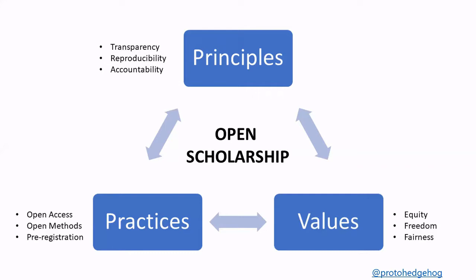The way I like to think about this is that if you consider these principles — like transparency, reproducibility, and accountability — they are interlinked with values such as equity, freedom, and fairness. They form a feedback loop with the practices. The values you hold as a human interact with the principles you have as a good scientist, and these should inform your practices, which inherently leads you to being an open scholar.